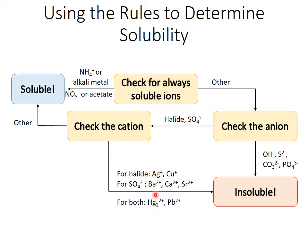For both, a dimercury or a lead cation also indicates insoluble. So to clarify, if you have a halide or a sulfate, check the cation against this list of exceptions, and if it's there then it's insoluble. If not, your halide or sulfate is a soluble compound.